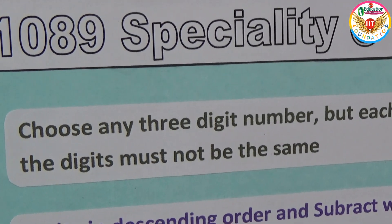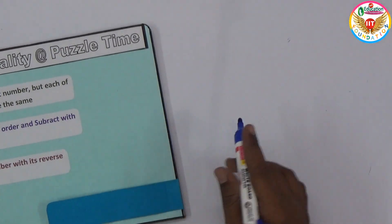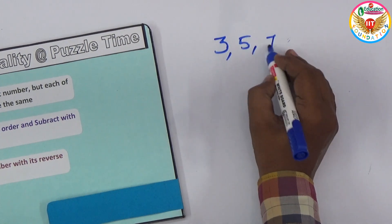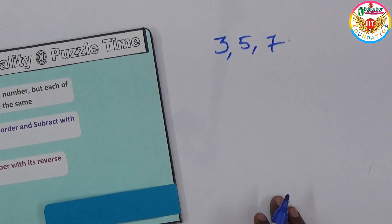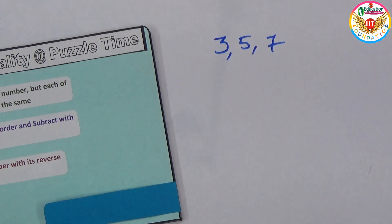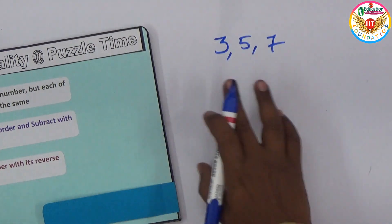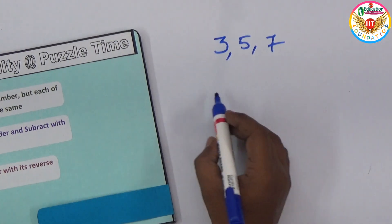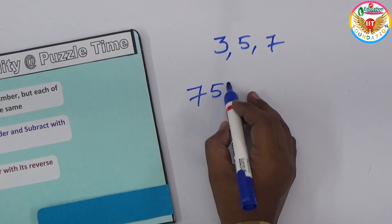First of all, we should take any three-digit number. Let's take 3, 5, 7. These three numbers I have taken. You can take any numbers and using these three, make them in descending order. If you write it, that is 753.